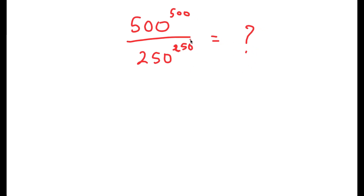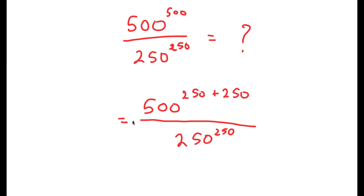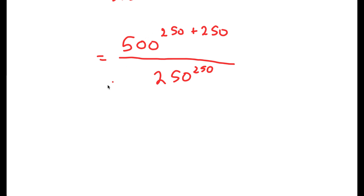To solve this problem, I'm going to first rewrite 500 to the power of 500 as 500 to the power of 250 plus 250. The reason I did this is because now I can use the property a to the power of m plus n is equal to a to the power of m times a to the power of n.